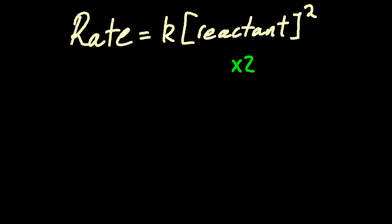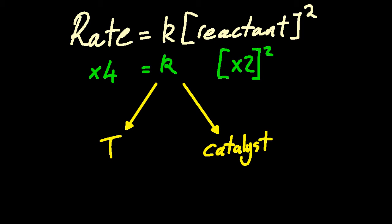So if I double the concentration of the reactant, then the rate is going to go up by double squared, which in this case is a factor of 4. And notice the rate constant doesn't change if you change the concentration of the reactants, but the rate constant will change if you change temperature or add a catalyst.